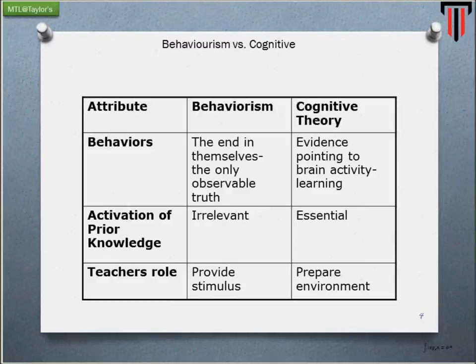Let's go through the attributes. From a behaviorist perspective, behaviors are the end in themselves — the only observable truth. They purely look at external behaviors, and that itself is the end. On the other hand, from the cognitivist perspective, they look for evidence pointing to brain activity and active learning. They are trying to relate an external behavior to a process that takes place from an unobservable position.